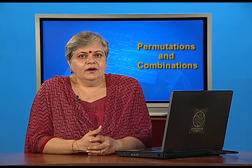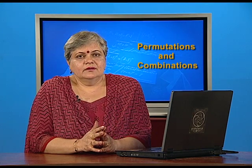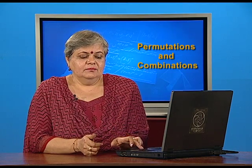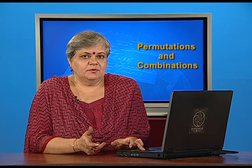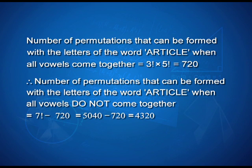For part 2, we need the number of arrangements where the vowels do not come together. The 7 letters of ARTICLE can be arranged in 7! ways in total. Subtracting the cases where all vowels are together: 7! − 720 = 4320. So 4320 words can be formed from ARTICLE where the vowels do not all come together.